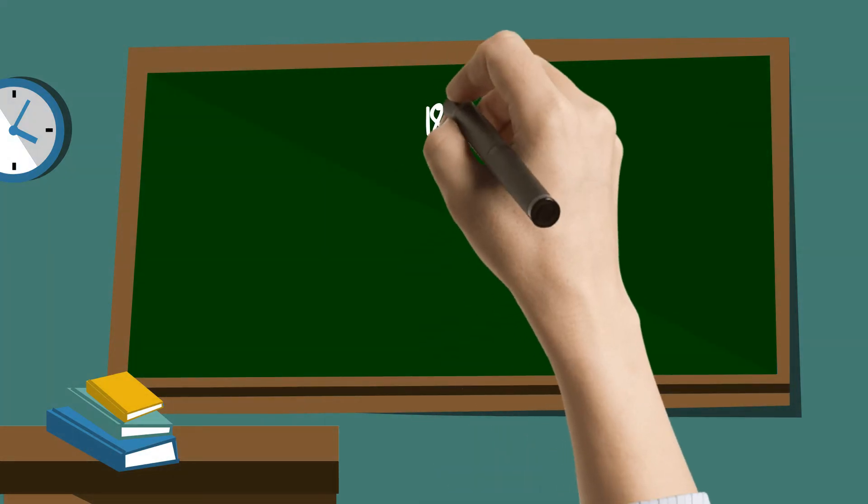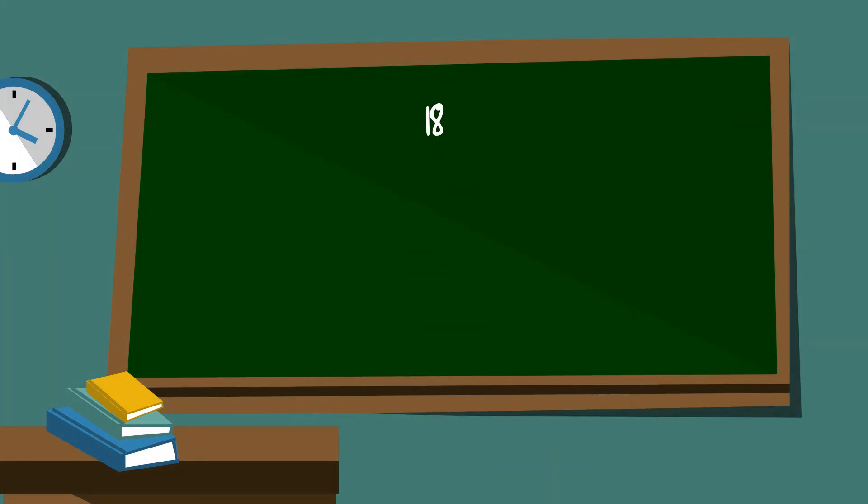Let's get started with 18. 18 is divisible by 2, so 2 times 9 equals 18. I will circle 2 because it is prime.